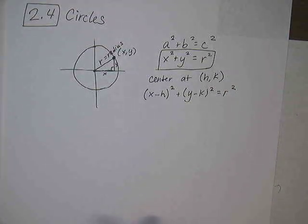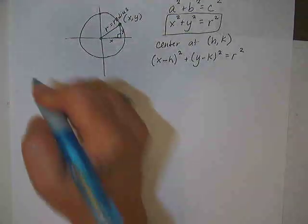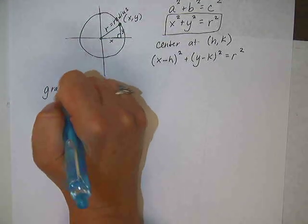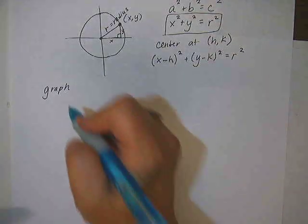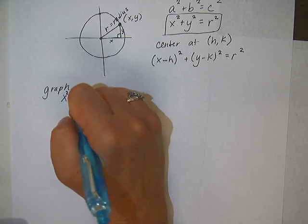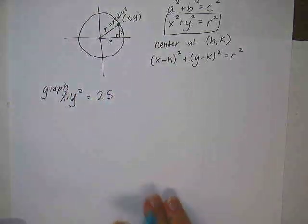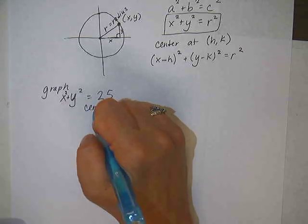Okay, so let's just look at a couple of quick examples. We'll just do that first. If I wanted to graph x squared plus y squared equals 25, what would that graph look like?